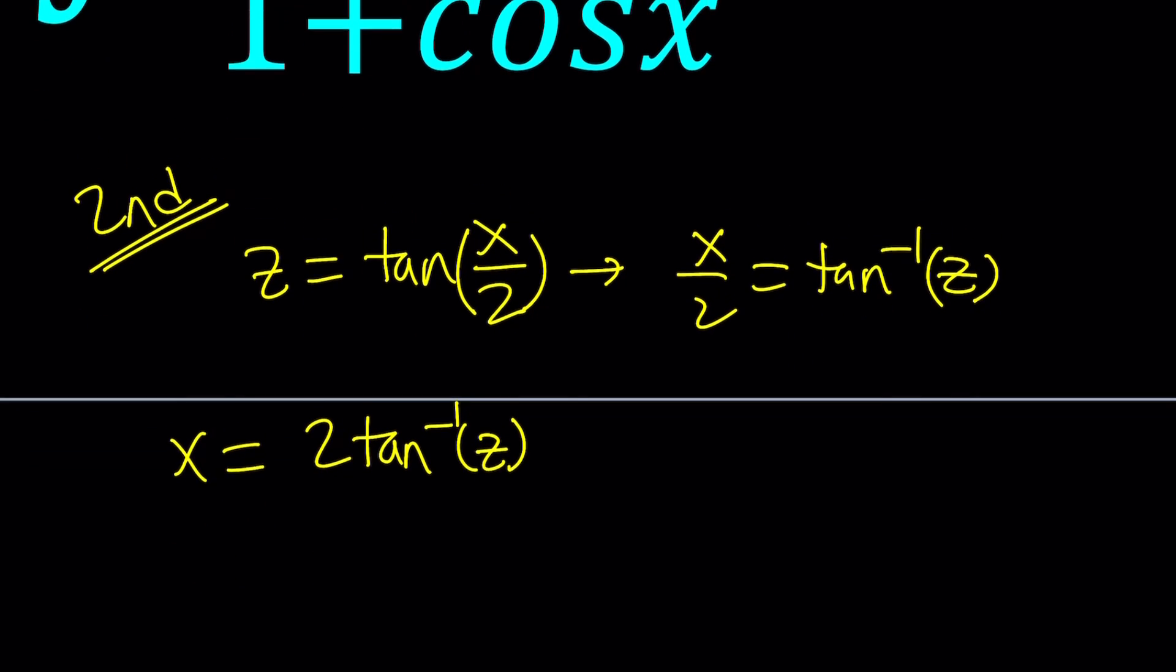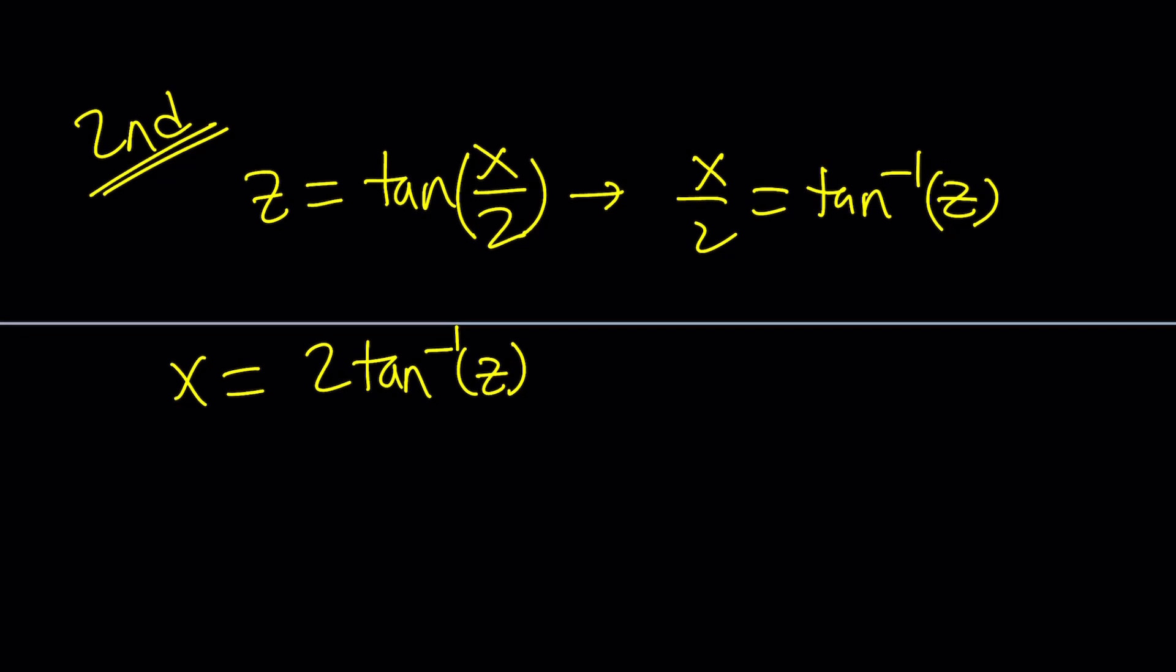And then from x, we're going to actually find dx. How do you find dx? By differentiating. The derivative of tan inverse of z is 1 over 1 plus z squared. But instead of z prime, which comes from the chain rule, we're just going to use dz. So this is going to be 2 dz over 1 plus z squared, which is nice.